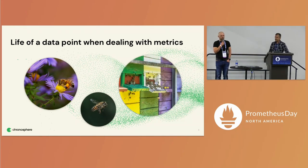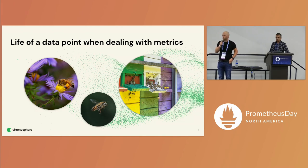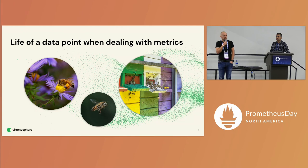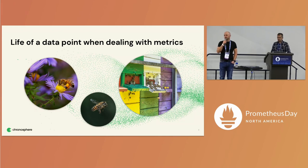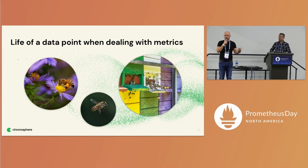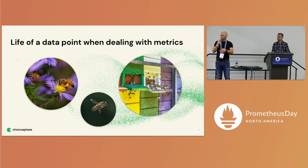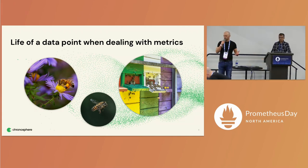If you look at metric data and how you collect it, and think about the life of a data point, I threw an example up here that actually uses bees — so if somebody has apiphobia, I apologize — but they lend themselves really well as an example. What's actually important when dealing with metric data? Discovering where you're collecting it, transporting it, and then storing it. Each of these areas has different problems you have to deal with.